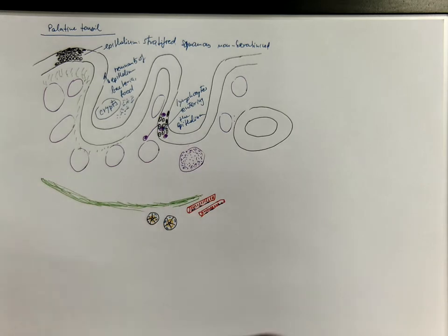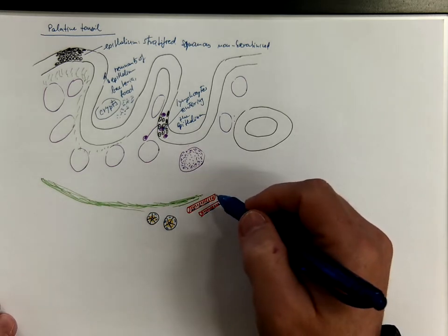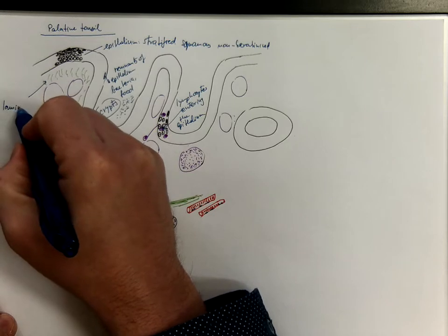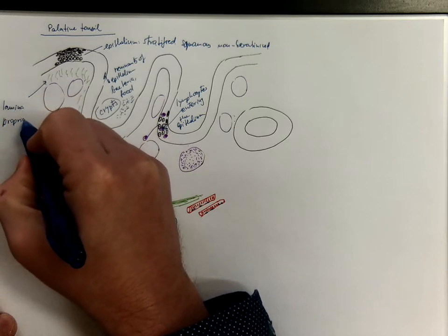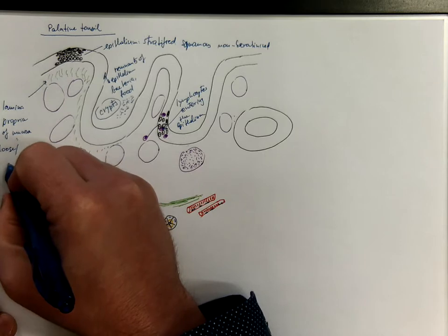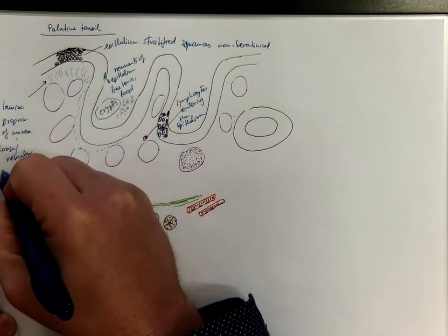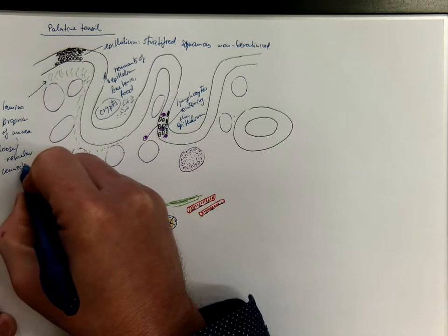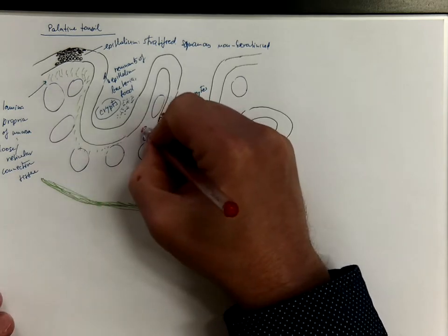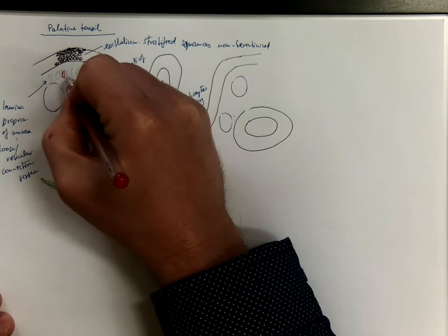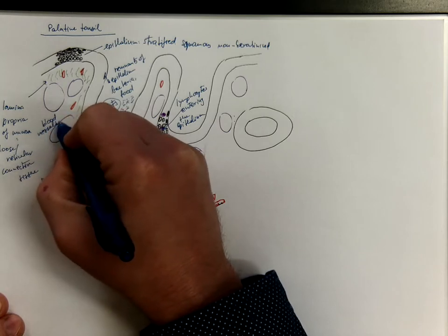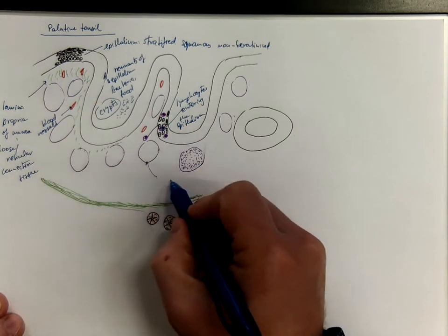So let's label the slide. Here is the lamina propria of the mucosa. That's loose or reticular connective tissue. So I should actually include also blood vessels here.